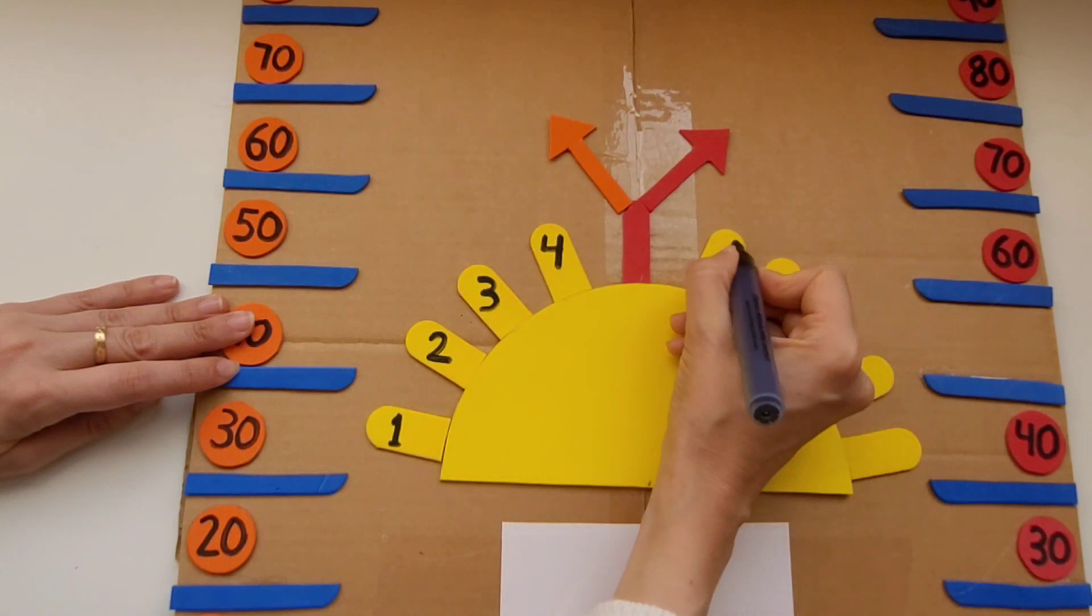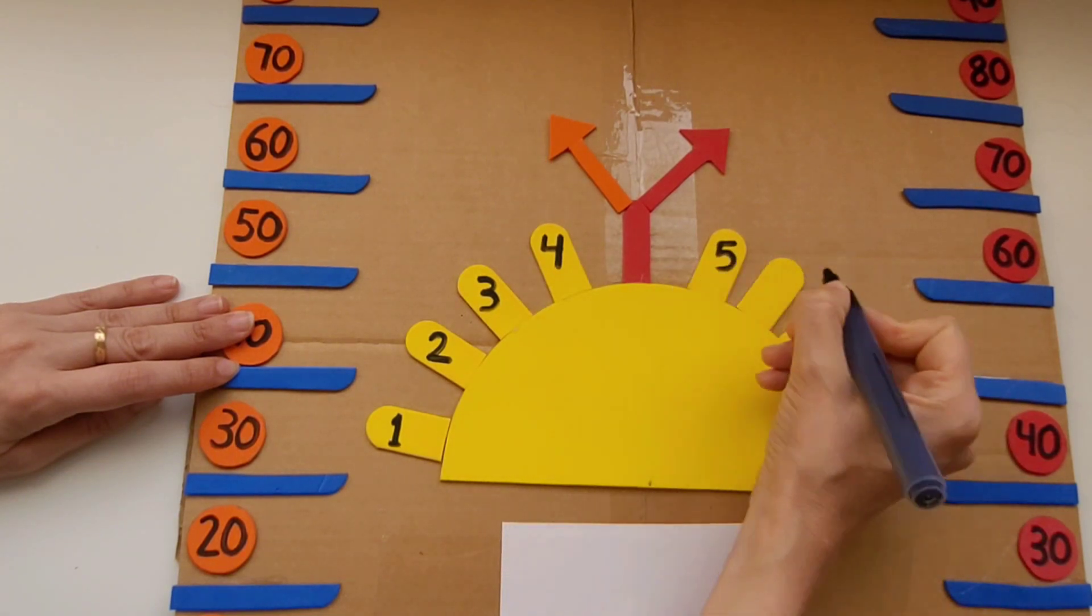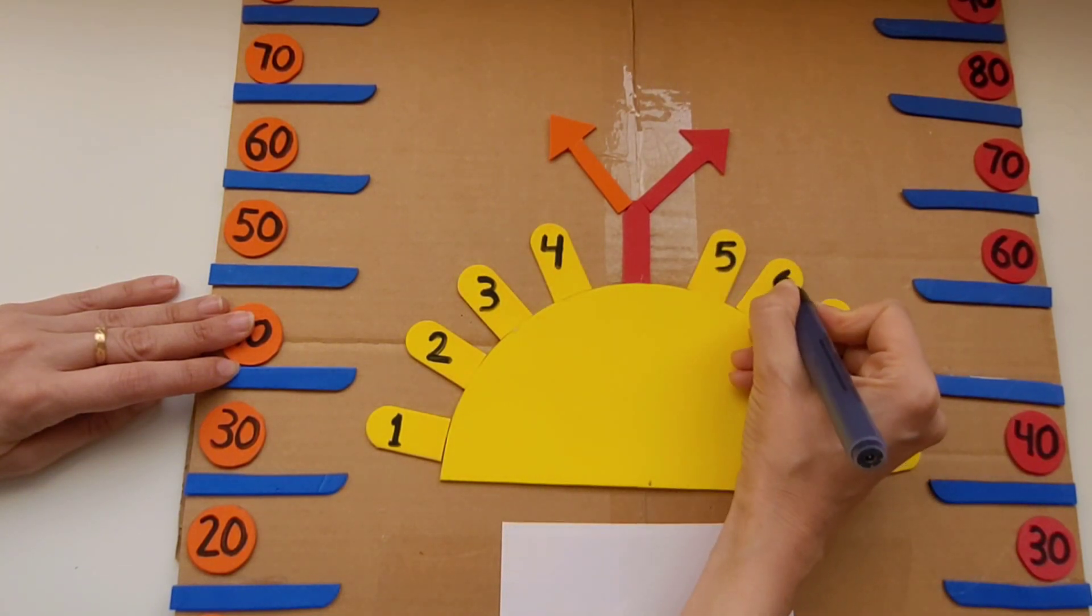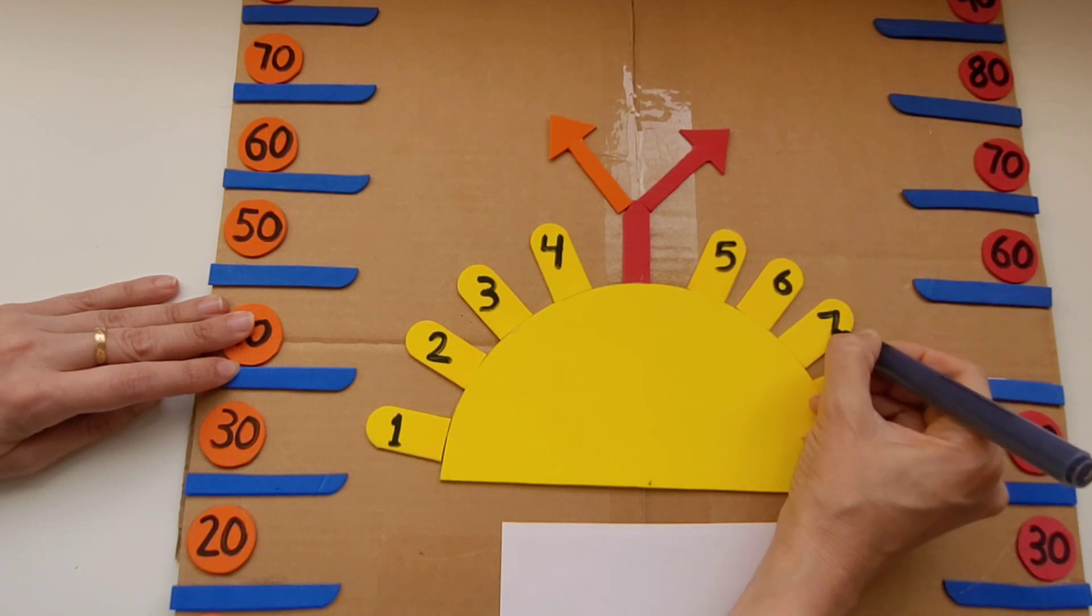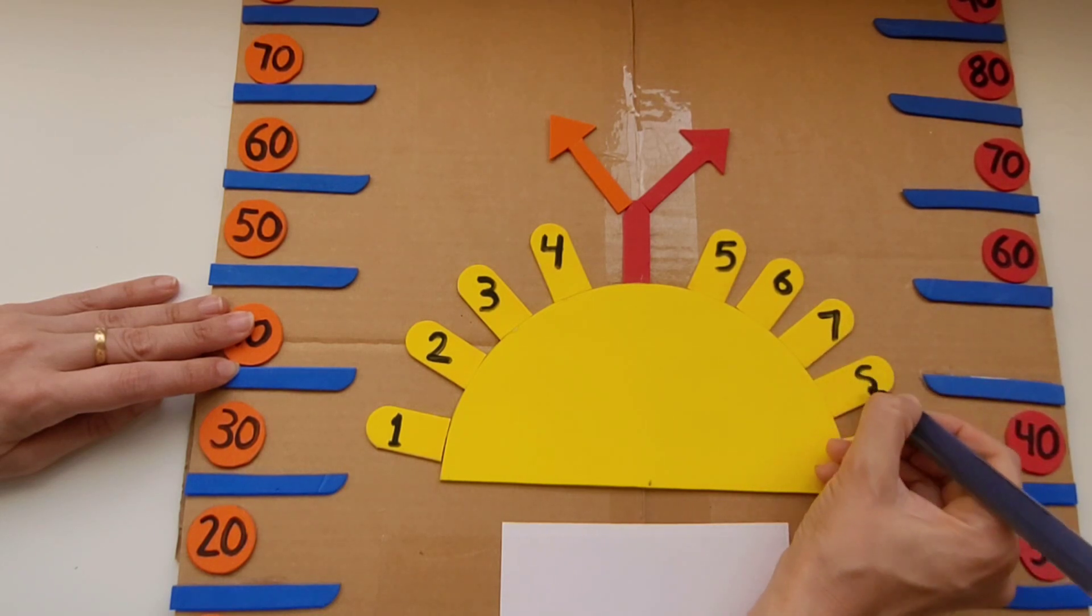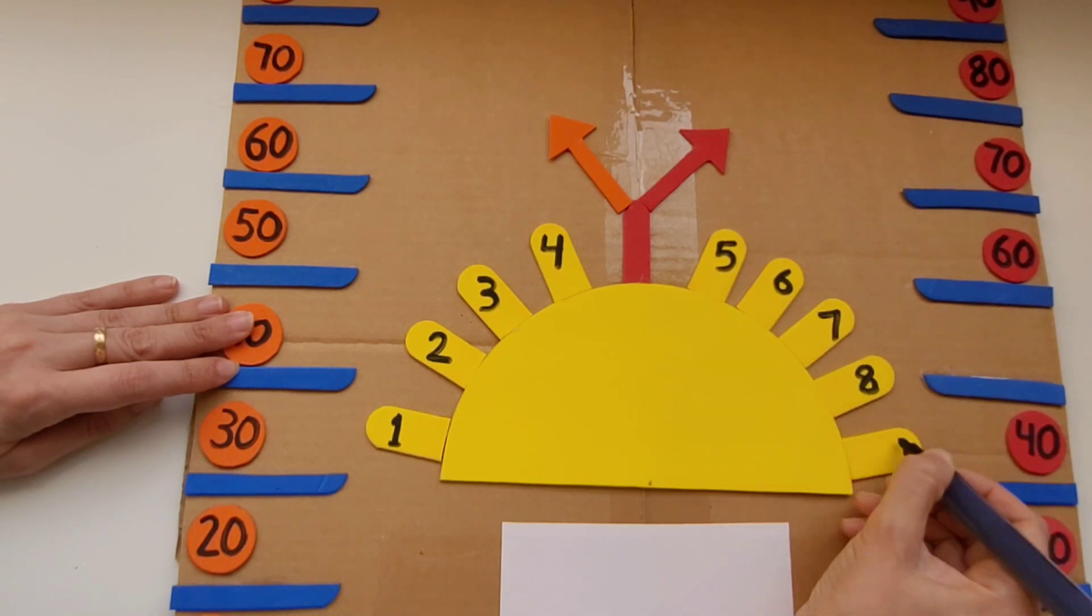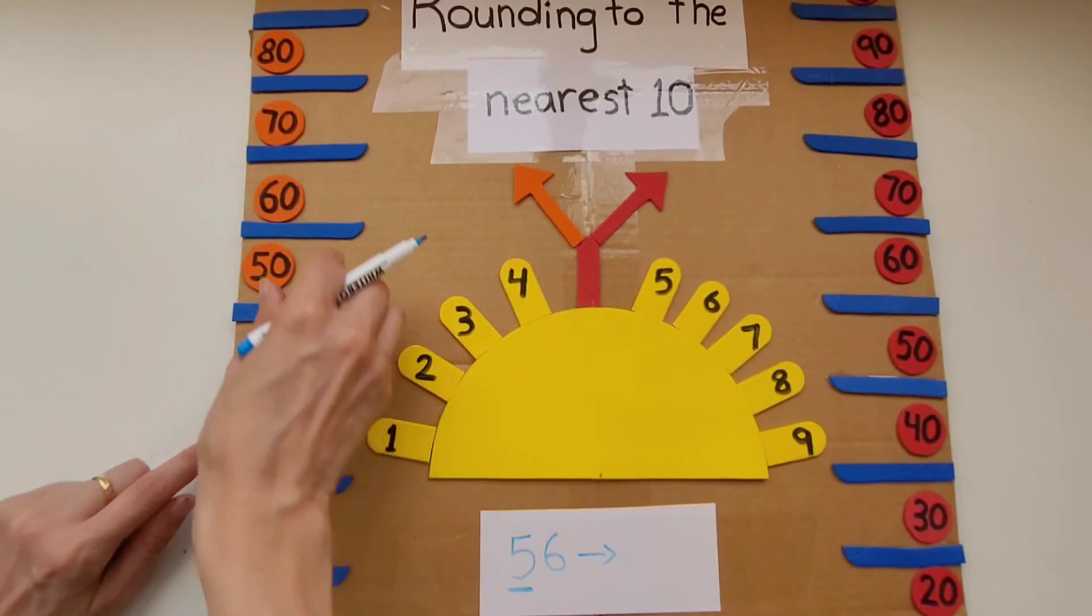Then I'm going to write the numbers one through four on the left side of the sun and then on the right side I'm going to write five through nine. Finally I'm going to label the activity and we're ready to go.